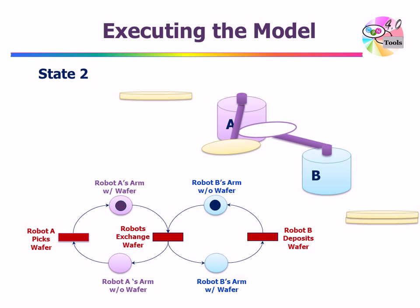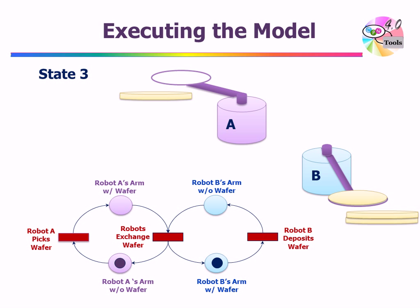Now we have a situation where these two robots can exchange the wafer. In the Petri Net model, the transition 'robots exchange wafer' is now enabled — it has tokens in both of its input places. Firing this transition deposits tokens in the output places, corresponding to the state where robot A is now without wafer and robot B has a wafer on its arm. When robot B has a wafer, it can deposit it, and we see in the Petri Net model that this transition is enabled. When we fire this transition, the system comes back to its initial state where robot A is without wafer and robot B is also without wafer.